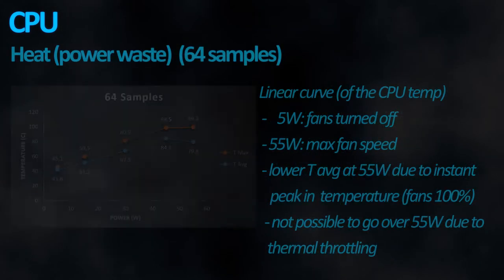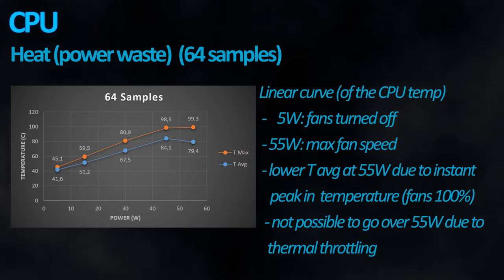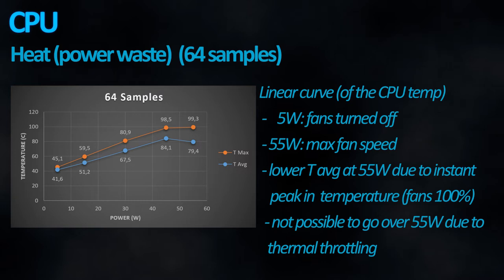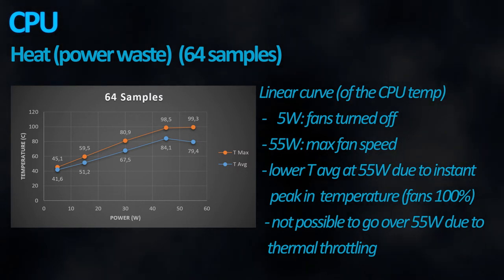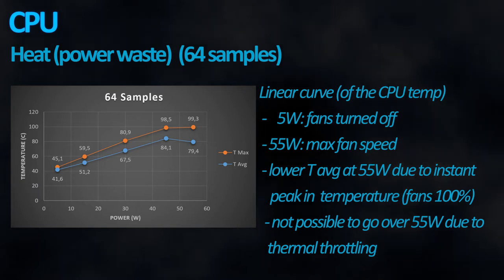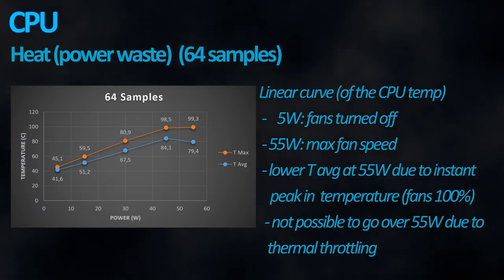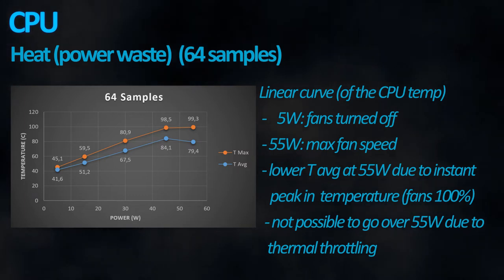Finally, we have a graph regarding temperature. Things of note: at 5 watts the fans were off, which, like trickle-down economics, didn't achieve much of anything. As expected, the higher the workload, the higher the average and maximum temperatures were — with the exception of the 55-watt result, where the average was slightly lower, with the help of the CPU fans working at their best, channeling the noise of a jet engine.